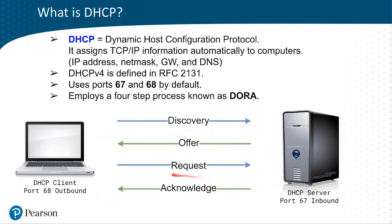That's the four-step process known as DORA: Discovery, Offering, Request, and Acknowledgement. We're going to demonstrate this when we configure a Debian server to use a DHCP-based IP address later in the course. To summarize, DHCP is an automated way of assigning IP addresses and other TCP/IP information to computer clients.